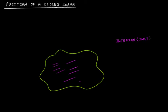This is a closed curve, and this section is the interior section — we say it's inside of this curve. If there's any point, let's say point A, we will say that point A is inside of this curve.